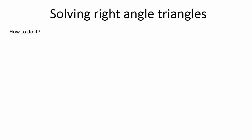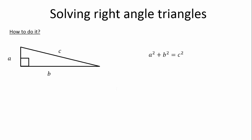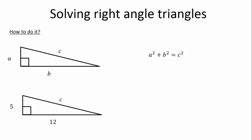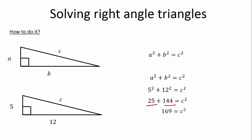Now, how to do it? We have a right-angled triangle with A, B, and C. We know that A squared plus B squared is equal to C squared. So we have another triangle — we have a 5, we have a 12, and we have a C. So we go A squared plus B squared is equal to C squared, and that is simply 5 squared plus 12 squared is equal to C squared. 5 squared is 25, 12 squared is 144, and that is equal to C squared. So 169 — we add those two together — is equal to C squared. Then we take the square root of 169 to get C, and that is equal to 13.